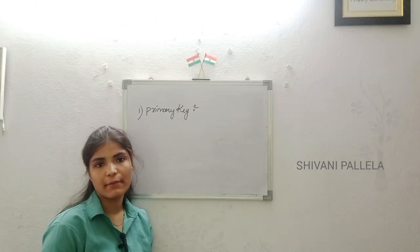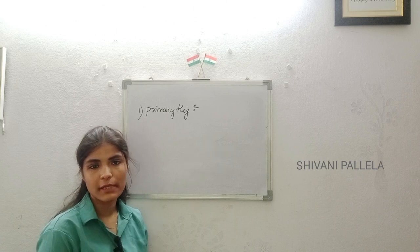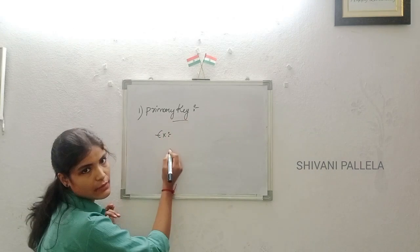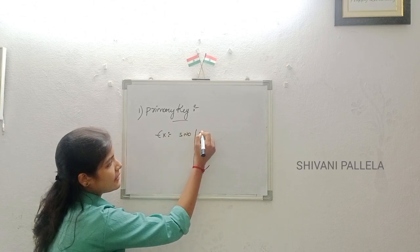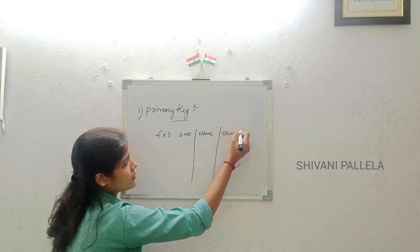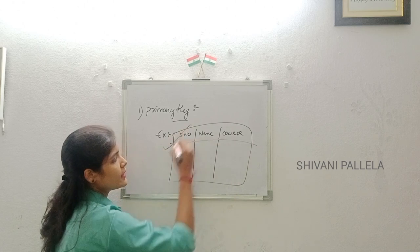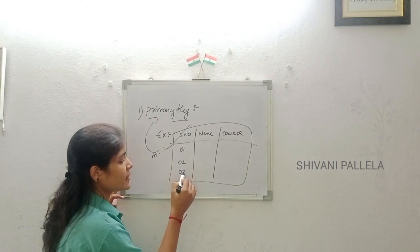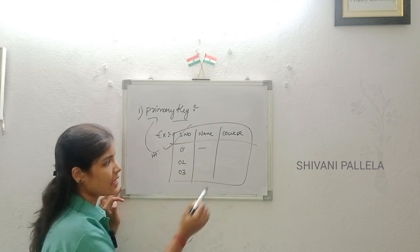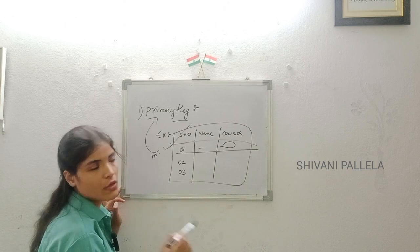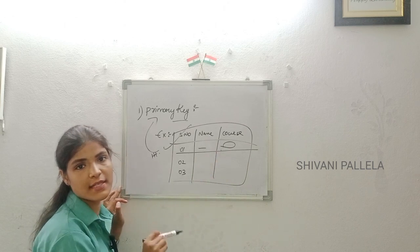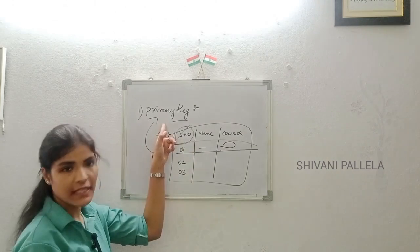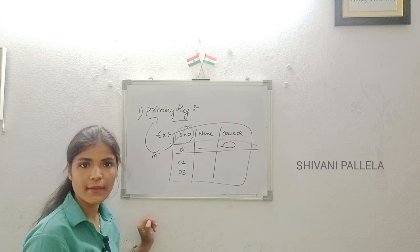What is meant by primary key? A primary key is a column or set of columns which uniquely identifies a row. For example, in a student table with section number, student name, and student course, the hall ticket number is considered the primary key. If we enter the hall ticket number of a particular student, we will get their name, course, marks — all row details.